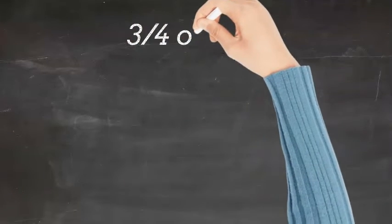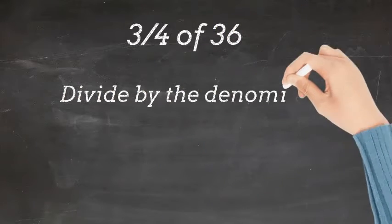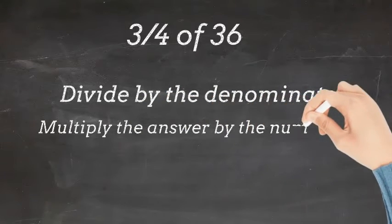Now let's try 3 quarters of 36. We are going to use the same strategy of divide by the denominator, then multiply the answer by the numerator.